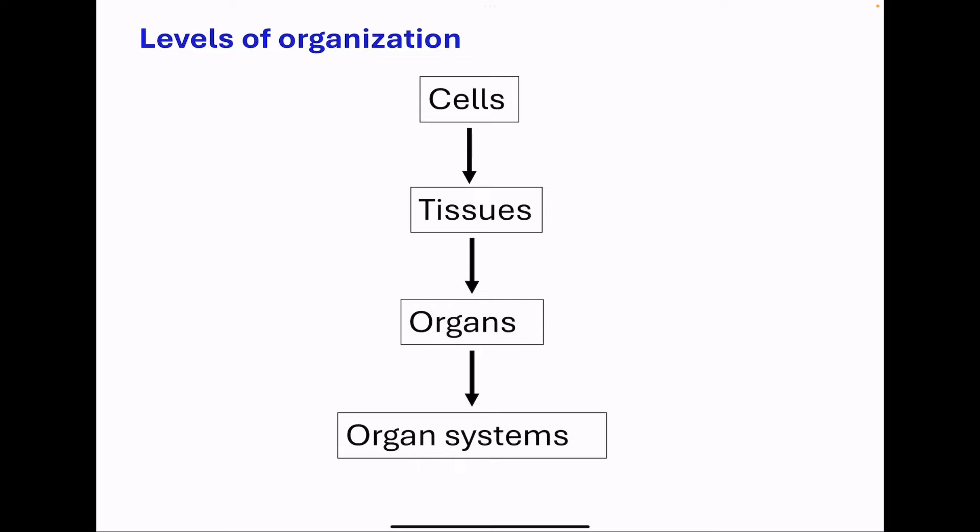Moving on to levels of organization, we begin with cells. Then we go to tissues. A tissue is a group of cells that are similar, working together to perform the same function. Then a group of tissues working together to perform a similar function makes an organ. And an organ system is made up of multiple organs working together to perform a specific function.